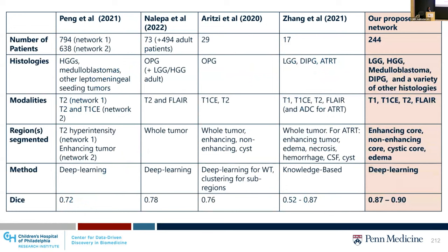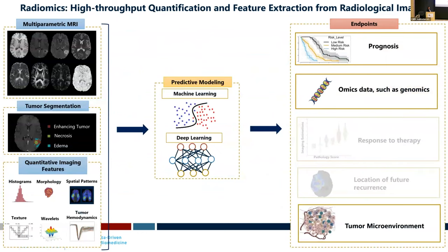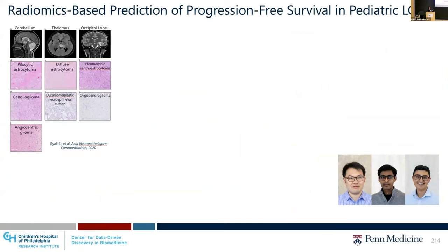Compared to a few other studies that have proposed tumor segmentation based on pediatric data, our method outperforms them and segments the sub-regions recommended by RAPNO. In radiomic studies ongoing at our group, we have used pediatric brain MRI scans and applied machine learning and deep learning for predicting progression-free survival, omics data, and tumor microenvironment. In pediatric low-grade gliomas — the most common brain tumors in children — surgical resection usually carries the most favorable outcome.